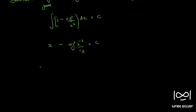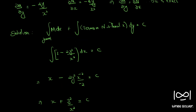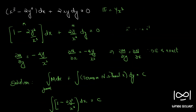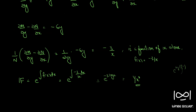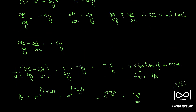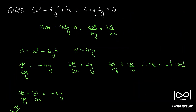Simplifying: the 2s cancel, giving x minus y² by x² equal to c. Wait, further simplifying we get x plus y² by x² equal to c. This is the final solution. We got our integrating factor as 1 by x³ using rule 4, and this is the solution to question number 215.